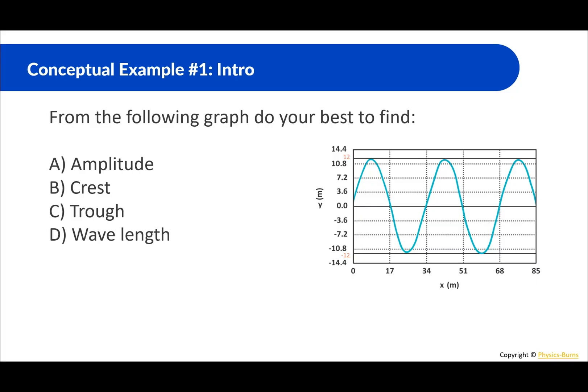From the following graph do your best to find amplitude, crest, trough, and wavelength. So this is like a position in the y direction over a position in the x direction or the horizontal and the vertical. So the amplitude remember is kind of like the highest point. So we can just kind of go from here to here. That'll give us the amplitude and we have this right here which is going to give us 12 meters. The crest is the same thing. It's the positive. So same thing over there 12 meters. Trough is the same thing except down here. So that's going to be negative 12 meters.